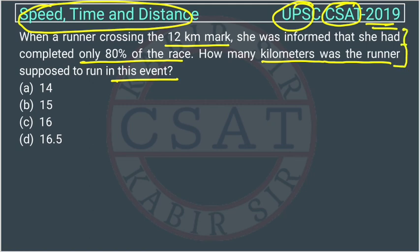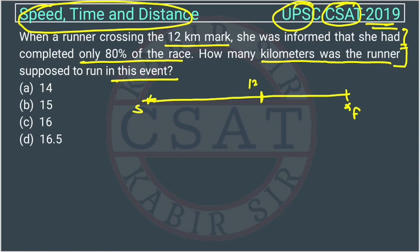By reading this it looks a little tricky, but this is a very easy question. Suppose the race starts from here — this is the starting point — and goes till here, this is the final point, and this is the 12 km mark. When she reached here, she was informed that she had covered 80 percent of the race.